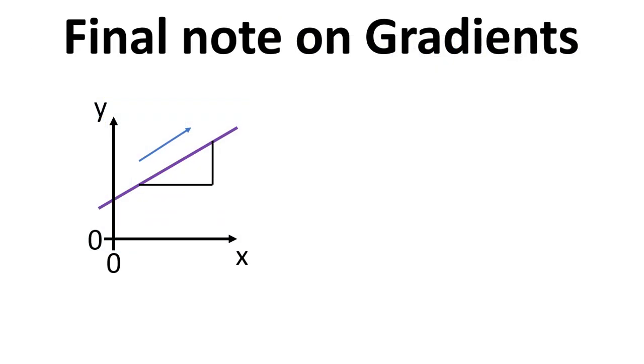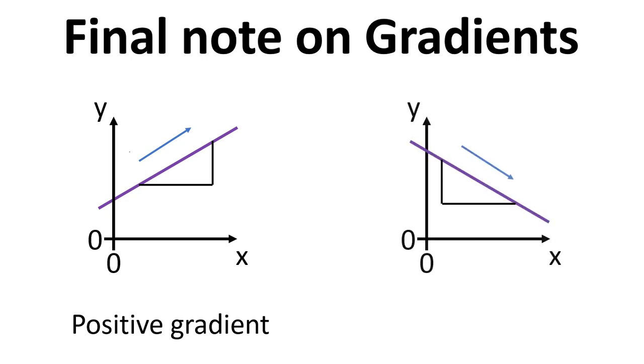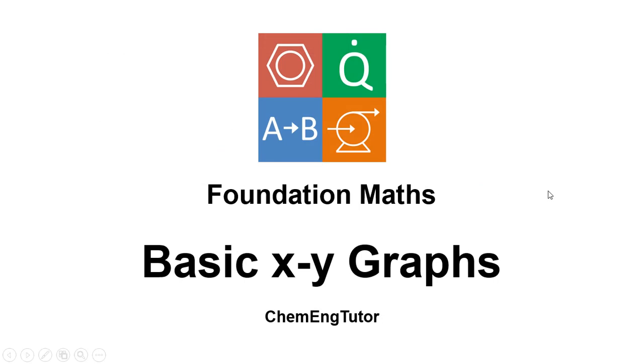Just one final note then on gradients. If we have a line of best fit that goes up like this, then the gradient should be positive. And if you've calculated it and it comes out negative, then you've done something wrong, because that's always a positive gradient. And then in the situation where the line is going down like this, then that should always be a negative gradient. So again, if you've calculated this and it comes out positive, you've done something wrong in your calculation. So something that slopes down like this is always a negative gradient.